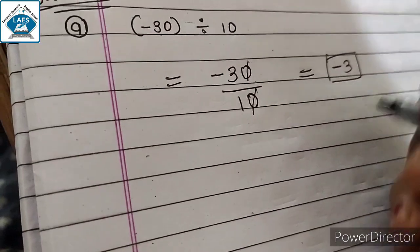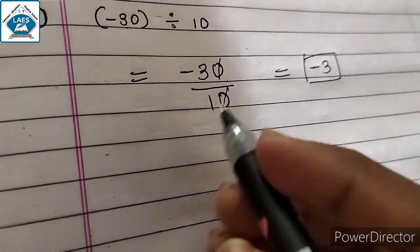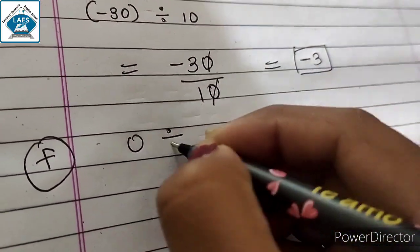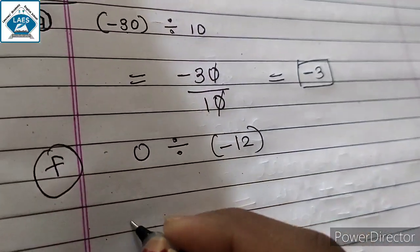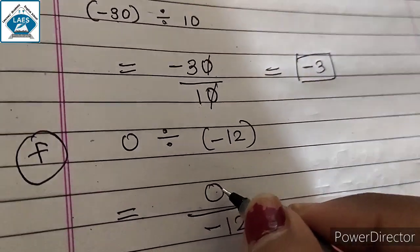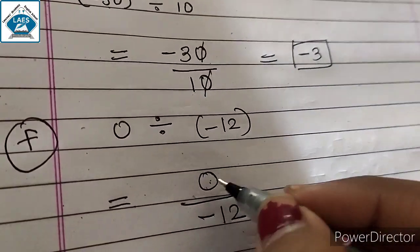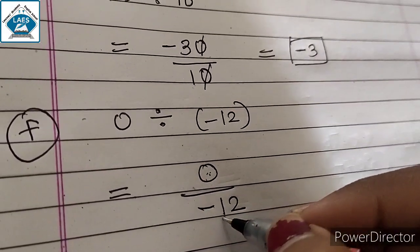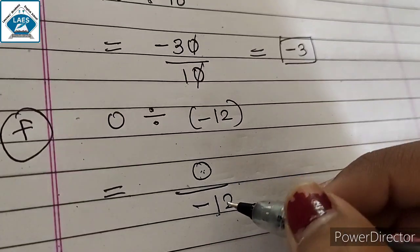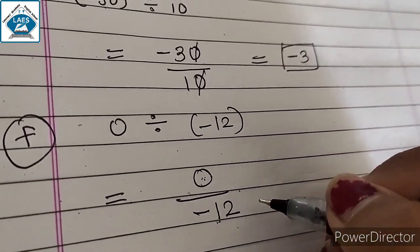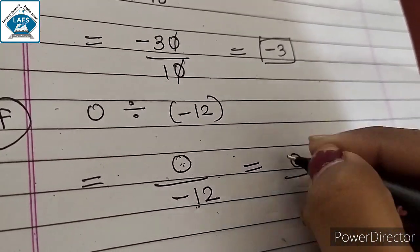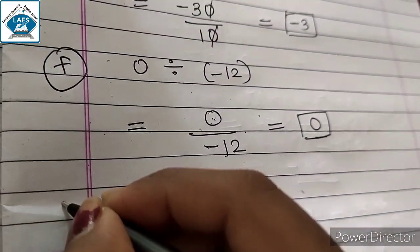Next, part B आपको खुद से solve करना है. Part F: 0 divided by minus 12. 0 को minus 12 से divide करना है. जैसे multiplication में 0 को किसी भी integer से multiply करेंगे तो answer 0 आता है, वैसे ही division में जब भी 0 को किसी digit से divide करेंगे, तो answer always 0 ही आएगा.